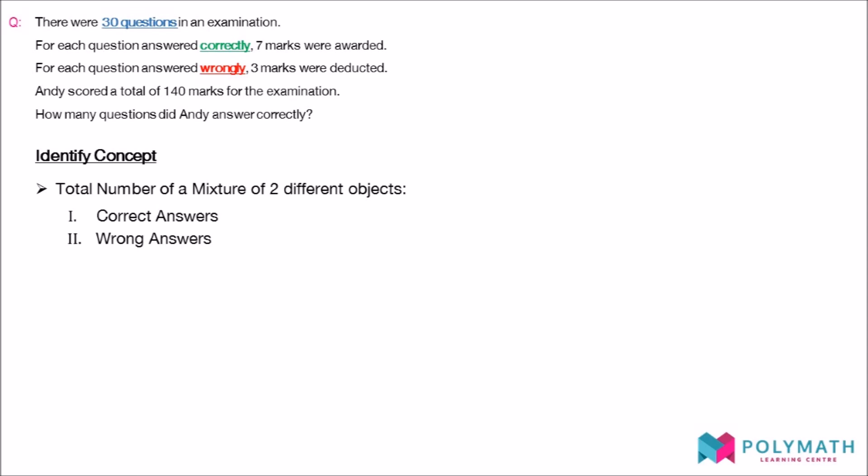In assumption questions, the two different objects will also have their own value each. In this question, the correct answers have a value of gaining seven marks each and wrong answers have a value of losing three marks each.